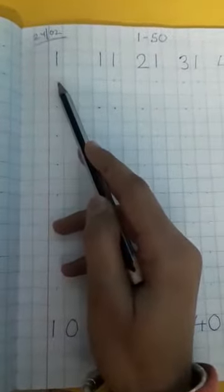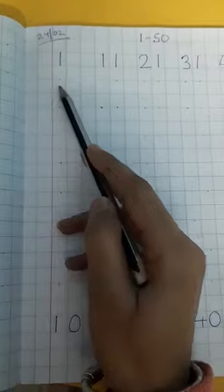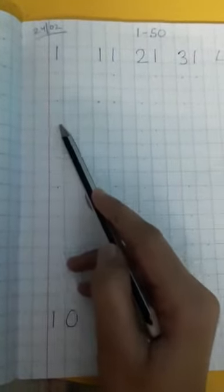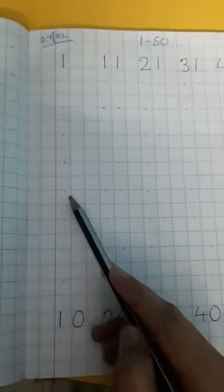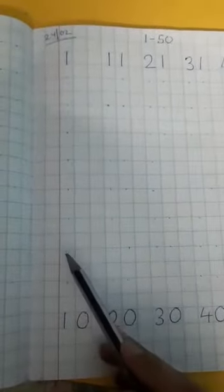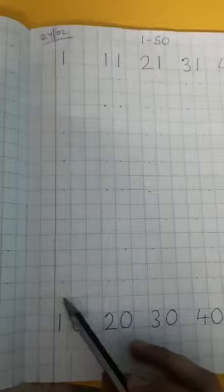You have to write 1 to 50. Okay, look here, start with 1, write here 2, number 3, 4, 5, 6, 7, 8, 9, 10.